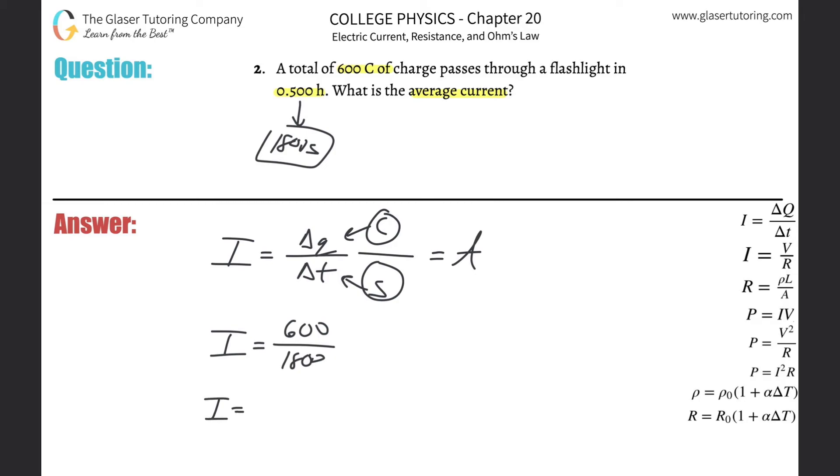And all we need to now do is do the division. So it looks like it's going to be about one third, right? And 0.333, 0.333 amps.